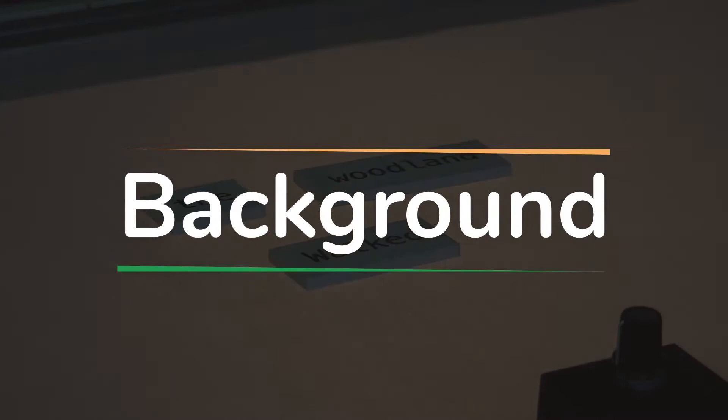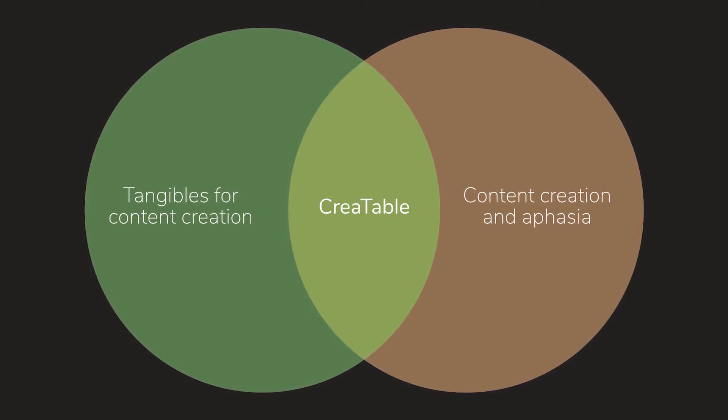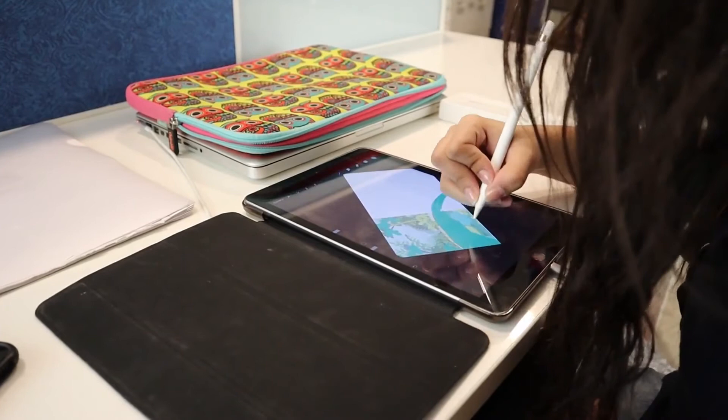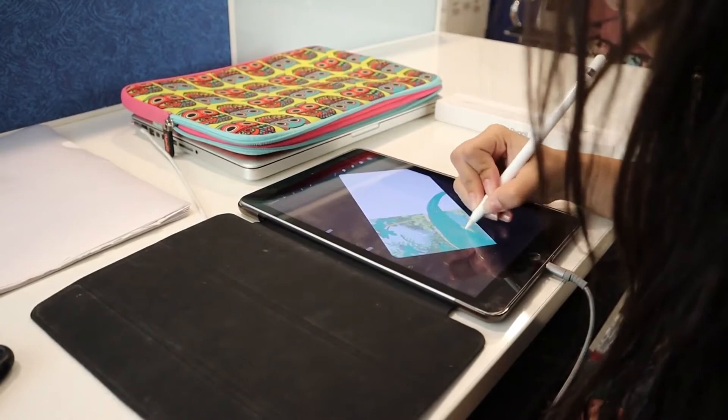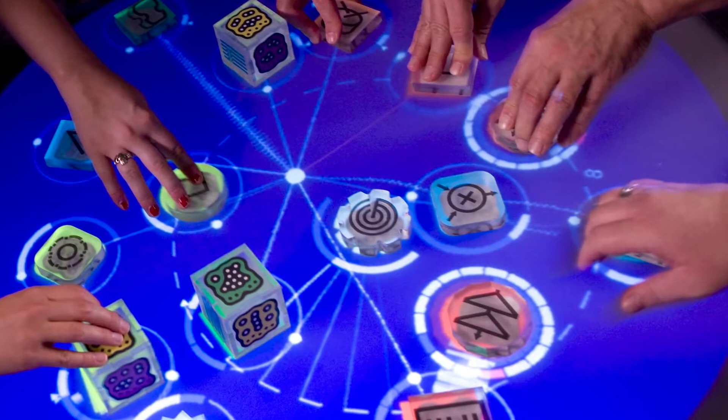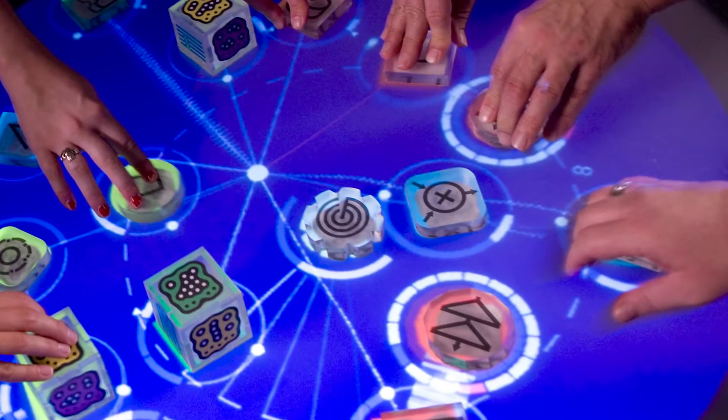This work sits at the intersection of tangibles for content creation and content creation for people with aphasia. Previous work has investigated how tangibles might be used to support creative endeavours. A common example of a tangible input device for drawing is the stylus. However, a number of prototypes have been built which offer more diverse manipulation. Reactable is probably one of the more notable examples, affording collaborative composition of music on a table using puck-like tangible objects. See the paper for more details in comparison to our work.